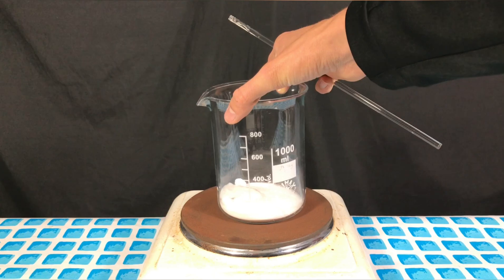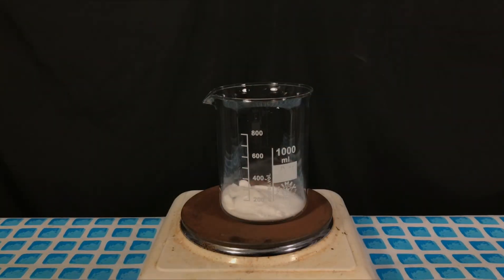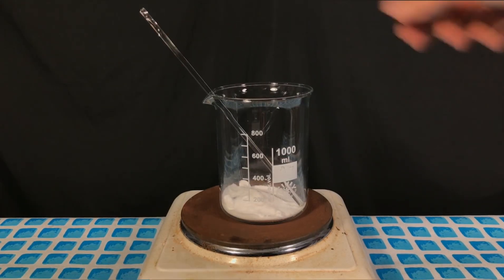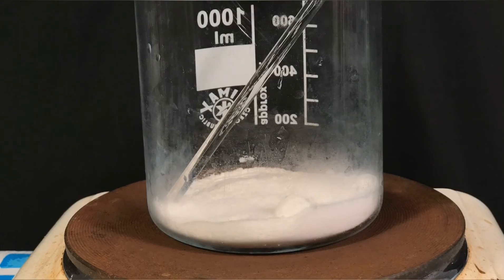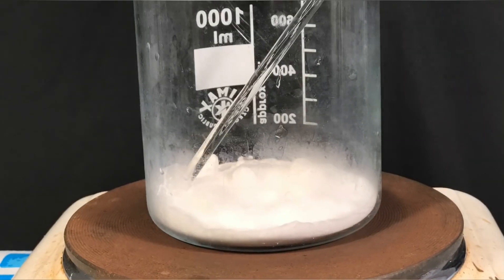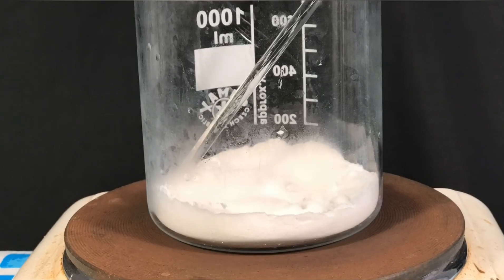To turn sodium bicarbonate into sodium carbonate a hot plate will be needed. A Bunsen burner or even an oven can also be used. It is important that the heat source used can reach approximately 200 degrees Celsius.